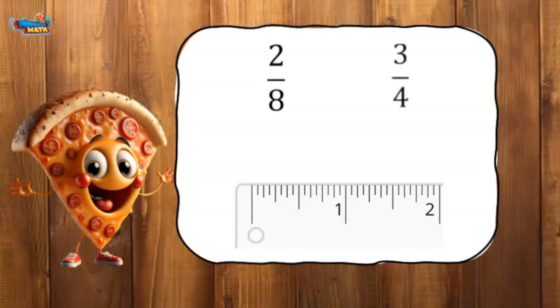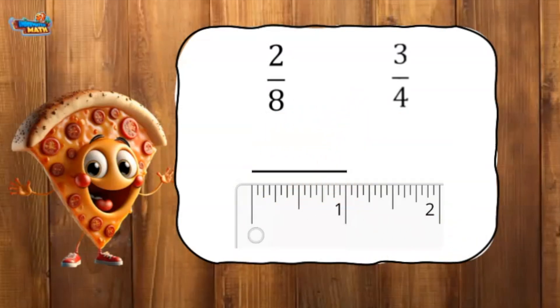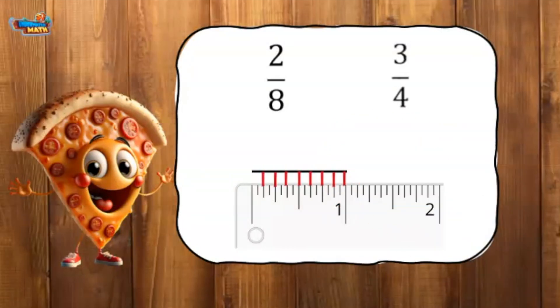Number lines can also be used to compare fractions. I draw a line measuring one inch. The first fraction has a denominator of eight. This means eight equal parts of the whole. I mark each eighth of an inch on the ruler. The numerator is two. I find the second eighth marked and label it two-eighths.